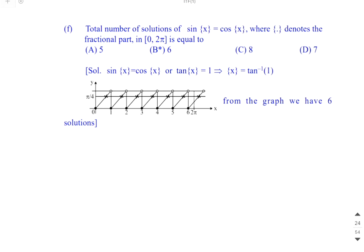The question asks us to find the total number of solutions of sin of fractional part x equal to cos of fractional part x. Simply, tan of fractional part x equals 1. The solution interval is 0 to 2pi, including endpoints. This means fractional part x equals tan inverse 1, which is pi by 4.